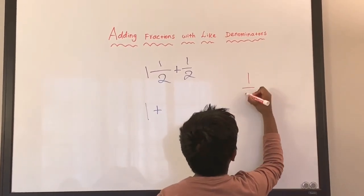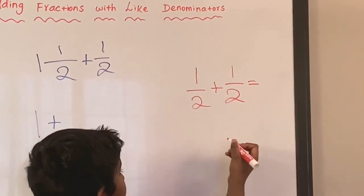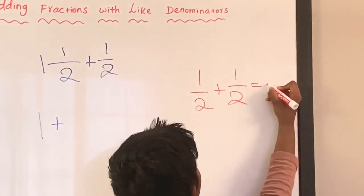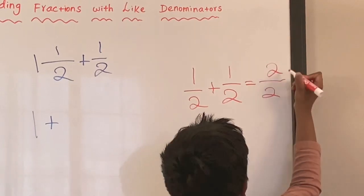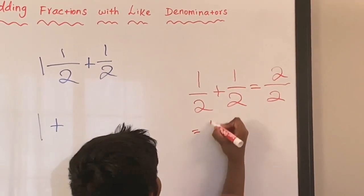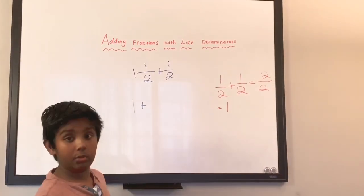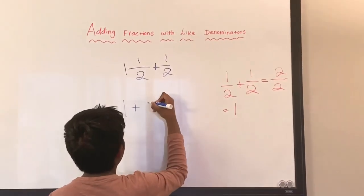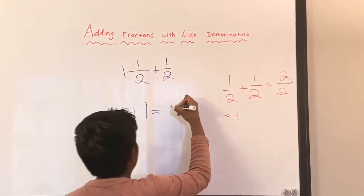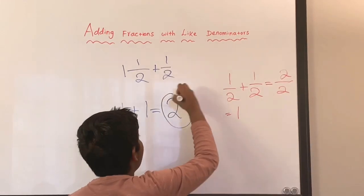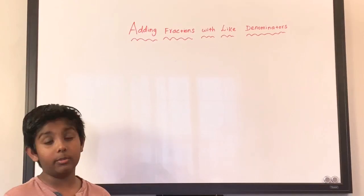One over two plus one over two — we keep the denominators the same, so it's going to be two, and then one plus one equals two, so that equals one whole. Now we have to add that one to the other one: one whole plus one whole equals two wholes. So two wholes is the answer.